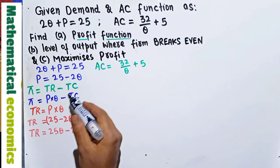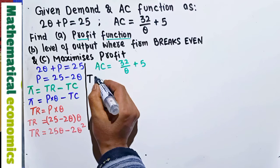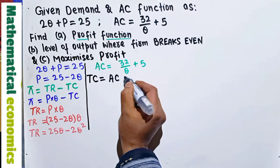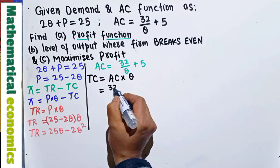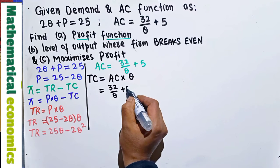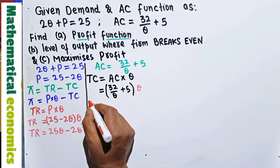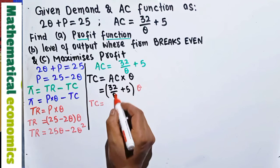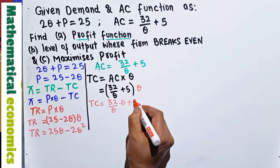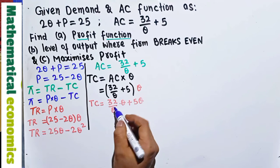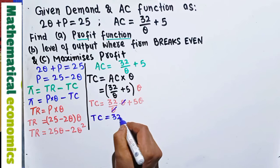Similarly, we need to find the total cost. Average cost is given. Total cost is equal to average cost times output Q. So multiplying the average cost function (32/Q + 5) by Q, we get: 32/Q × Q + 5 × Q. The Q's cancel, so the total cost function is TC = 32 + 5Q.